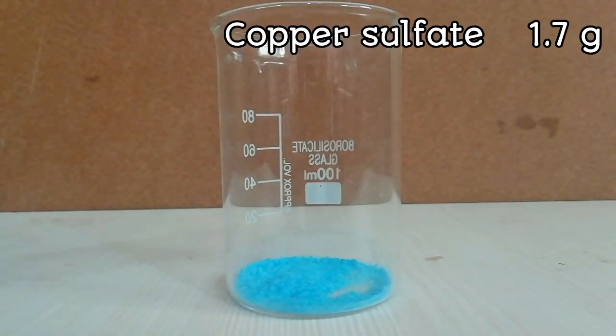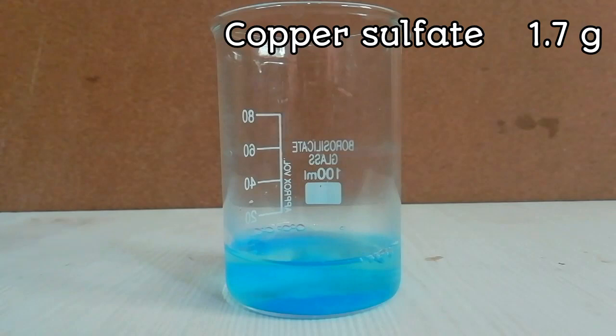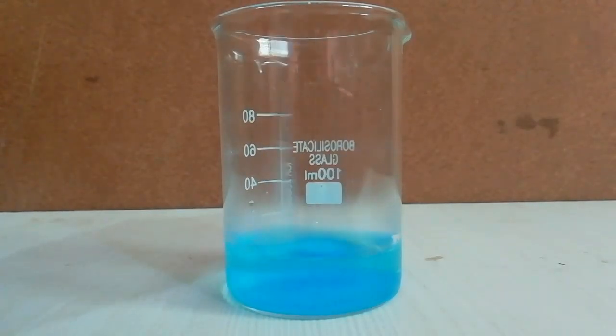First, add 1.7 grams of copper sulfate to a beaker and dissolve it in 20 milliliters of distilled water.